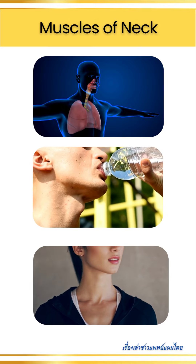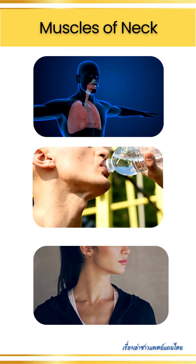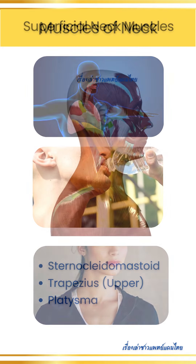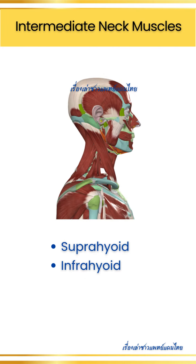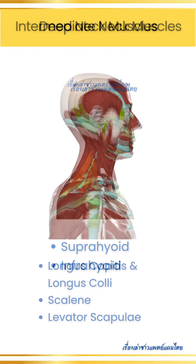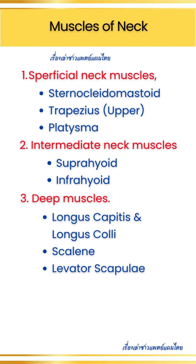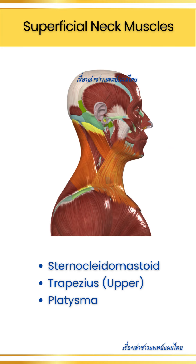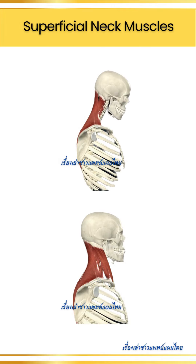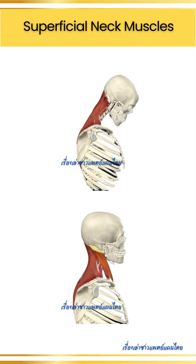These muscles can be categorized into three main groups: superficial muscles, intermediate muscles, and deep muscles. Here's an overview of these groups and some of their major muscles. One: superficial neck muscles. These muscles are located near the surface and primarily control the gross movements of the head and neck.